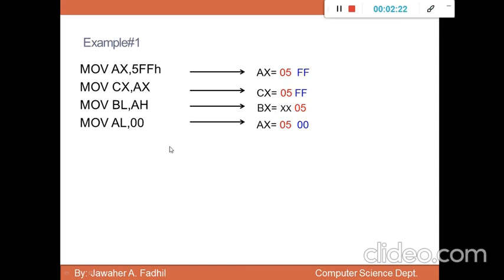MOV BH, 0E. The last value for BX was 05 in BL and don't care in BH. Now the value of BH will change to 0E. The value of BX will be 05 in BL and 0E in BH.